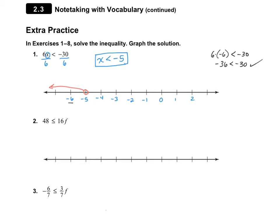Plugging in 0 is always a good one to try. So 6 multiplied by 0 should be less than negative 30 — that's 0 less than negative 30, which is not correct. And we would expect that because 0 is not part of our solution set. Now go ahead and do number 2 on your own, then turn the video back on to see if you got it right.